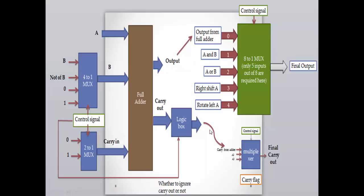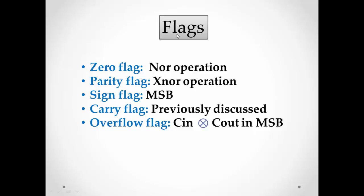The carry flag output comes from the full adder for arithmetic operations; for shift and rotate, the corresponding A0 or A3 bit becomes the final carry-out. This covers almost all aspects of a simple ALU. The remaining element is the flags register. The zero flag is 1 when all bits of the final output are 0 — computed as NOR of all output bits. The parity flag is 1 when there is an even number of 1s — computed as XNOR of all final output bits. The sign flag is simply the MSB of the final output. The carry flag has been discussed. The overflow flag is computed as carry-in XOR carry-out at the MSB position.